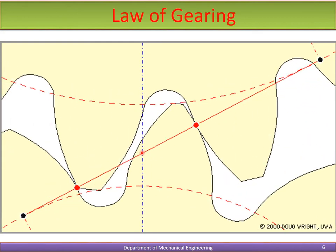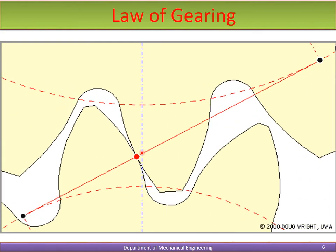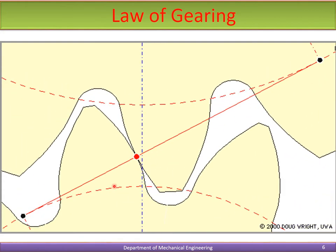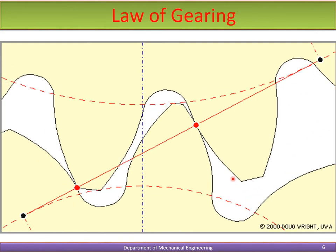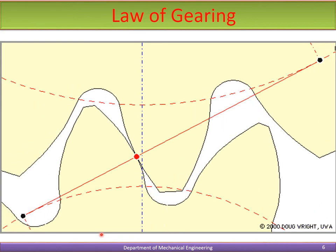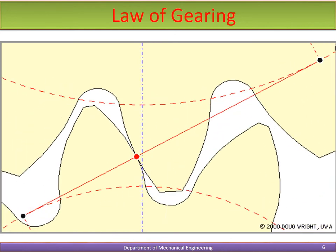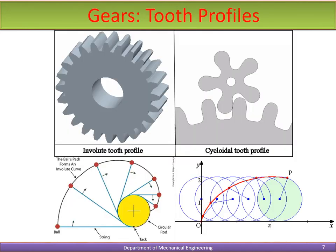This law of gearing only holds when the teeth have a particular profile. Two profiles satisfy the law of gearing: the involute tooth profile and the cycloidal tooth profile.